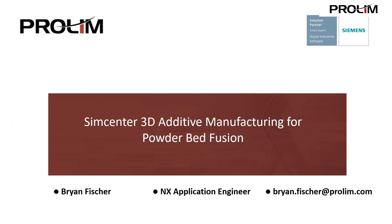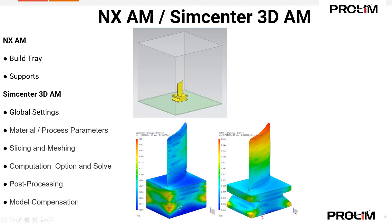Now let's look at the agenda for today. First, we'll take an existing design and bring it into NX Additive Manufacturing. We'll place it into a Build Tray and add supports. We will then go into SimCenter 3D Additive Manufacturing, set some global settings, material parameters, process parameters, slicing and emission, and so on.